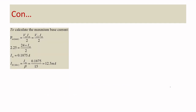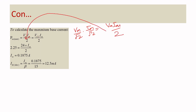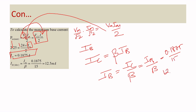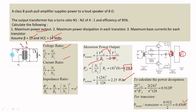To find maximum base current, we use P_ac = (Vm × Im) / 2. Substituting VCC for Vm and solving gives peak collector current Im = 0.1875 amps. Then, since IC = β × IB, we get IB = IC / β = 0.1875 / 15 = 12.5 milliamps. This is the maximum base current for the given circuit.